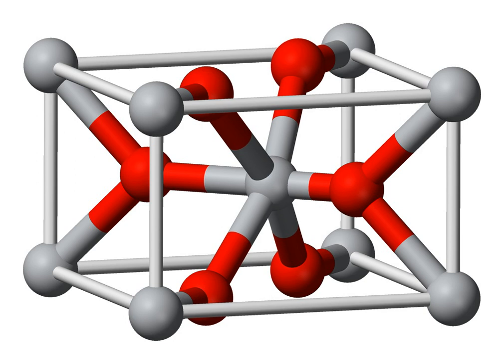CrO2 adopts the rutile structure, as do many metal dioxides. As such, each chromium center has octahedral coordination geometry and each oxide is trigonal planar.